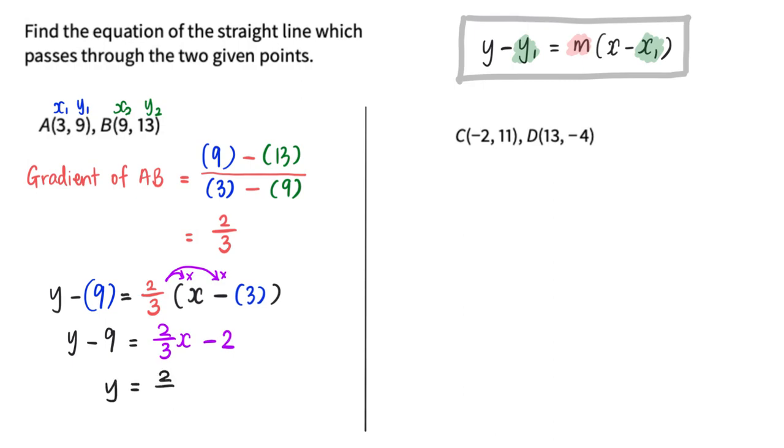I will add 9 to both sides, so I will get my final answer as 2/3x minus 2 plus 9. Finally, y equals 2/3x plus 7.